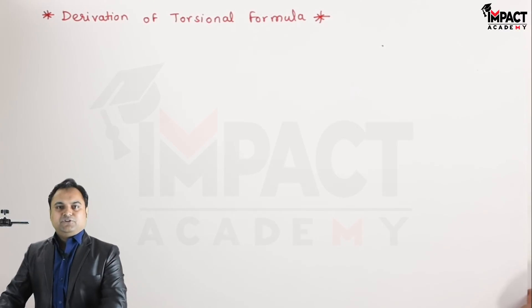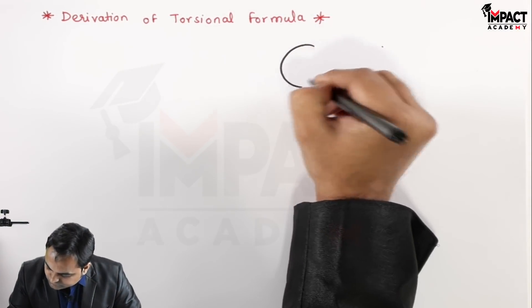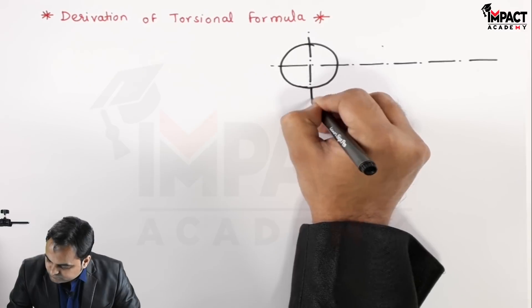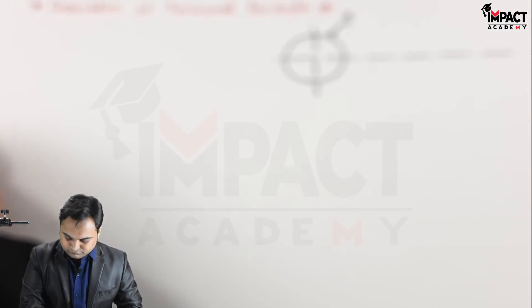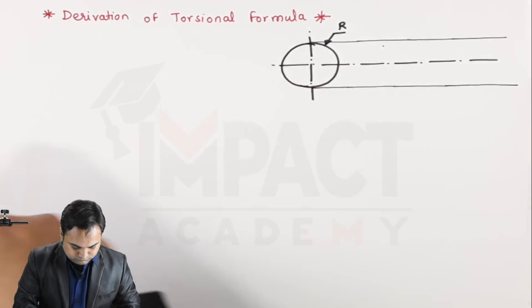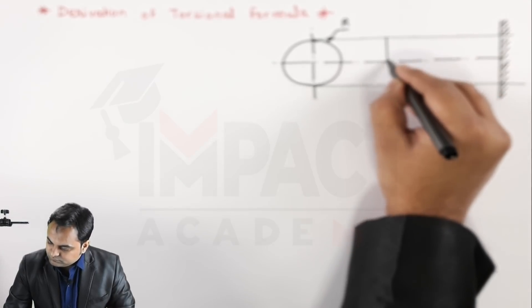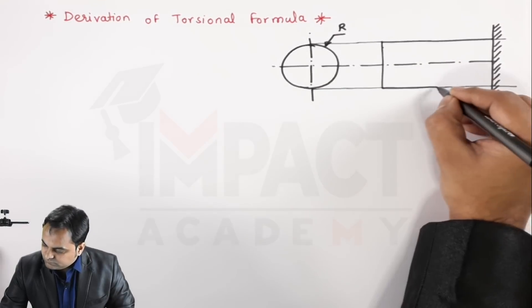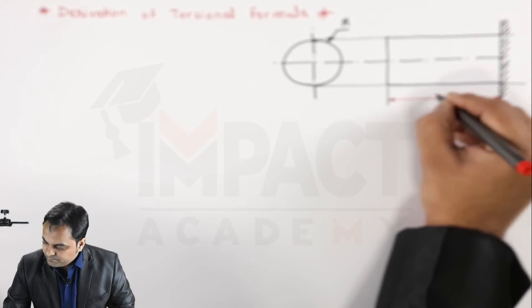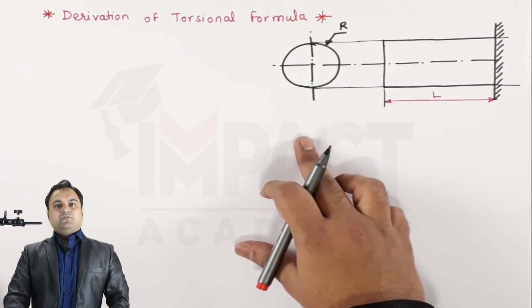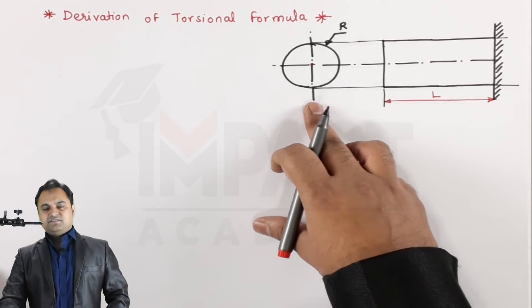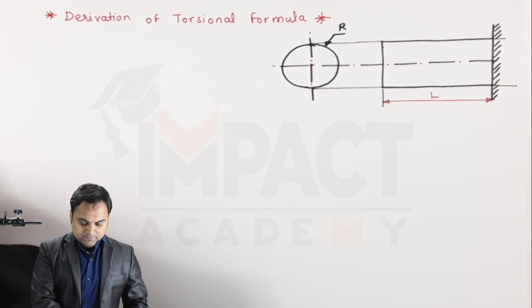First I'll draw a diagram of a solid circular shaft. I have taken a solid circular shaft and these are the two views — this is the front view and here is the side view.